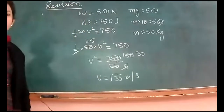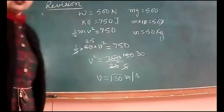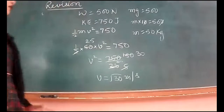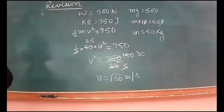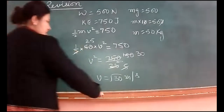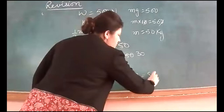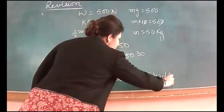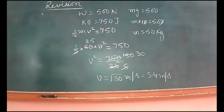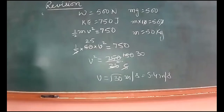The closest perfect square is under root 25, which is 5, so the answer must be 5 point something — approximately 5.4 meter per second. This is the velocity with which the man should run in order to have 750 joules of kinetic energy.